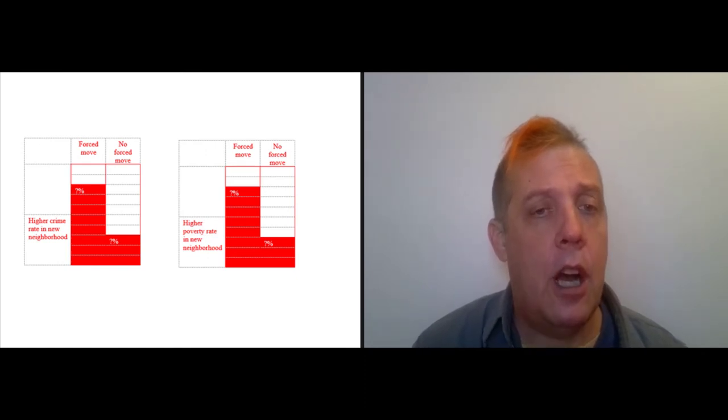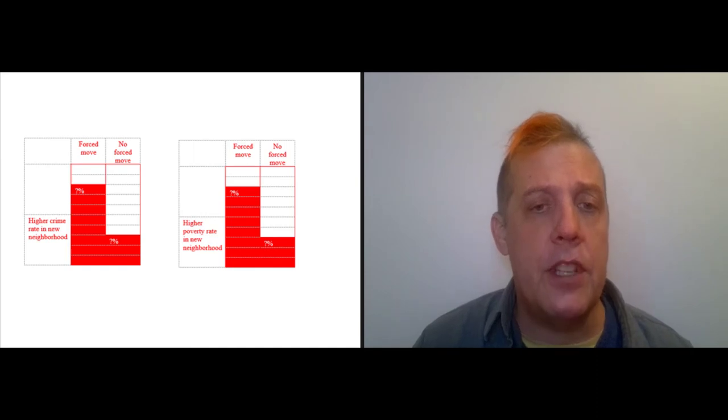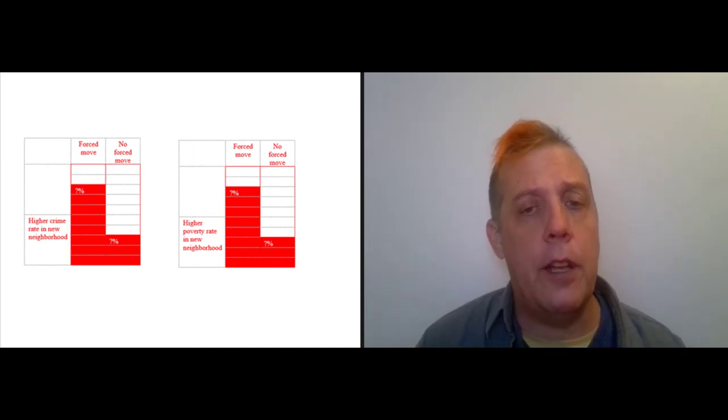There are going to be two percentages. One is the percentage of people who undergo a forced move who move to a higher crime neighborhood, and the other is the percentage of people who don't have a forced move that move to a higher crime neighborhood. Those two numbers are different, which indicates that there's a correlation. The diagram on the right shows the exact same thing for the other half of this thesis, that there's a higher poverty rate in the new neighborhood.